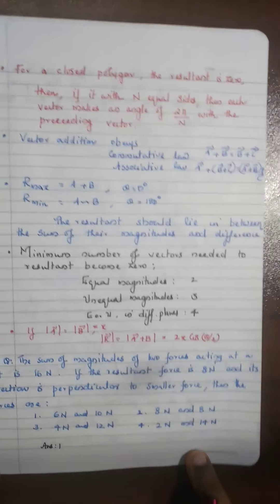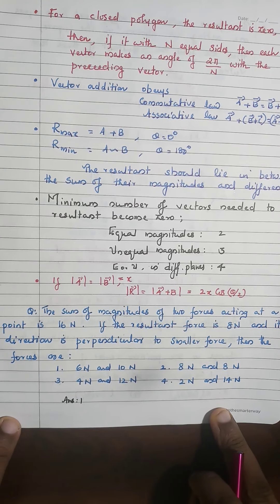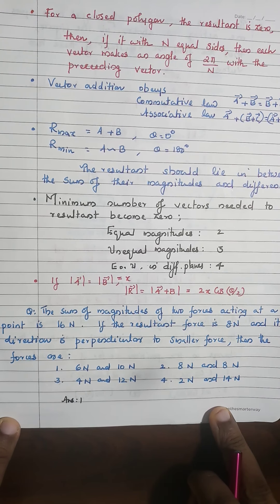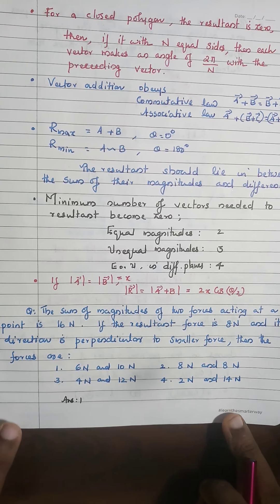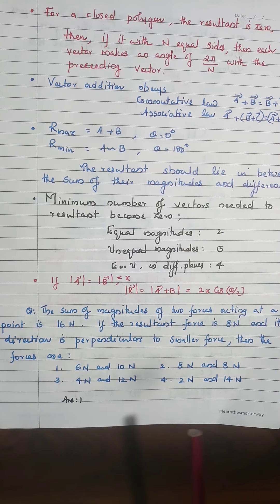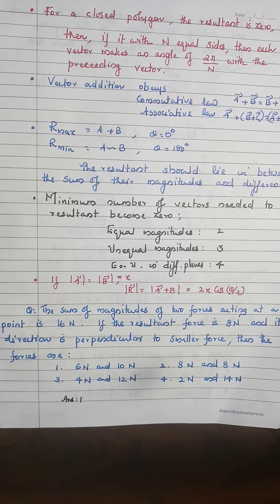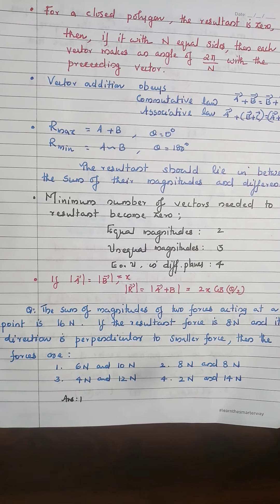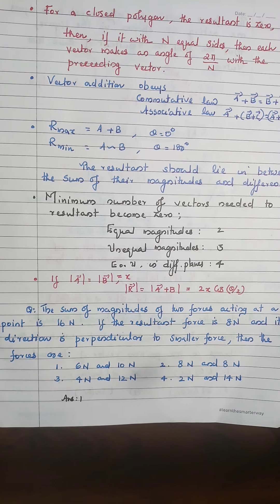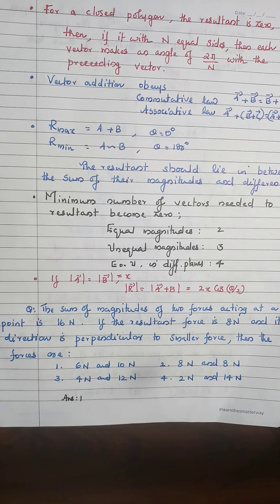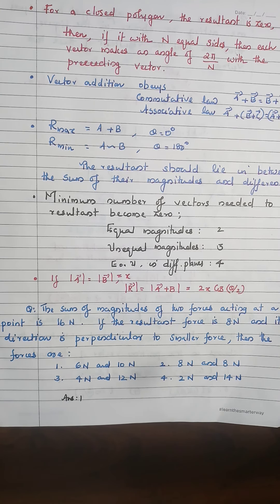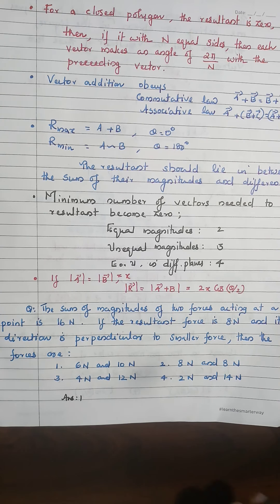A very important exam question: the sum of magnitudes of two forces acting at a point is 60 N. If the resultant force is 8 N and its direction is perpendicular to the smaller force, find the forces. You can solve it by applying R = √(A² + B² + 2AB cosθ) and tan α = B sinθ / (A + B cosθ), or by logically drawing a triangle with one side perpendicular to the smaller force.